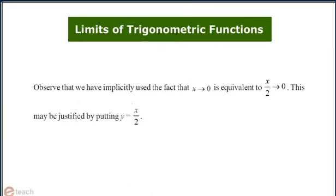Observe that we have implicitly used the fact that x tending to 0 is equivalent to x by 2 tending to 0. This may be justified by putting y equals x by 2.